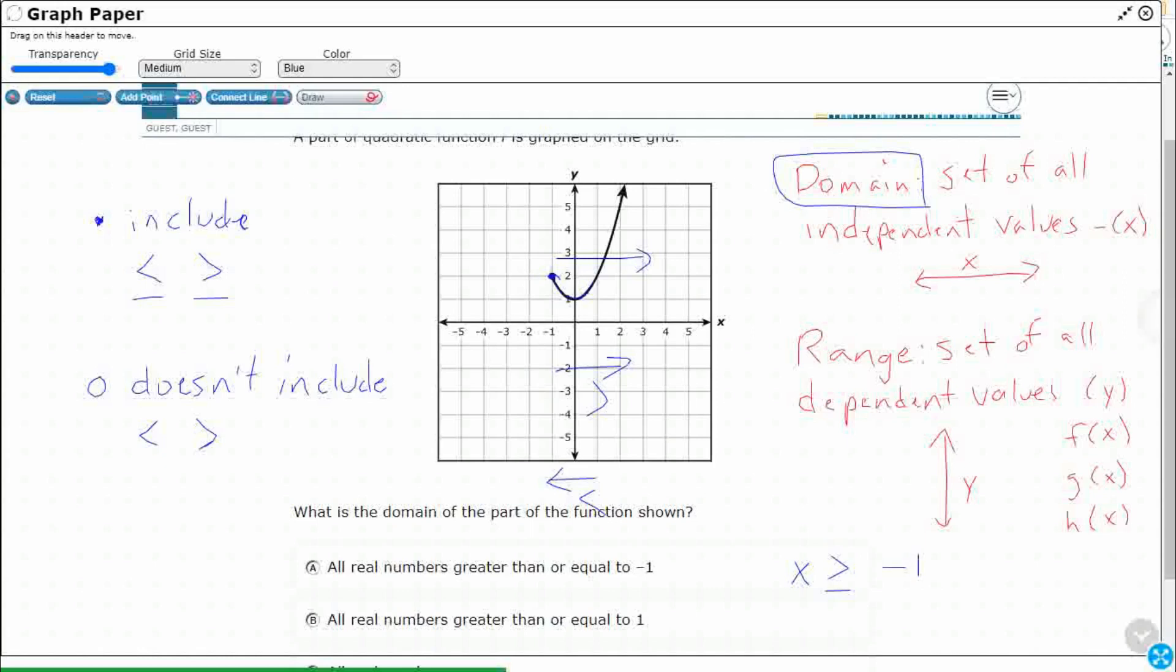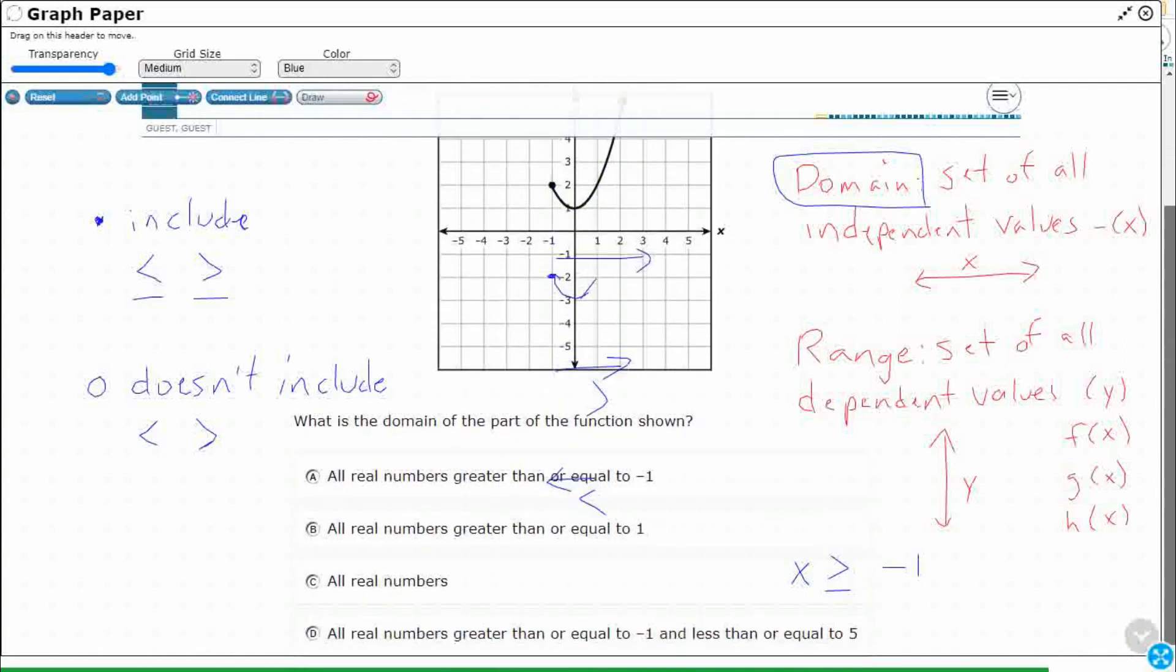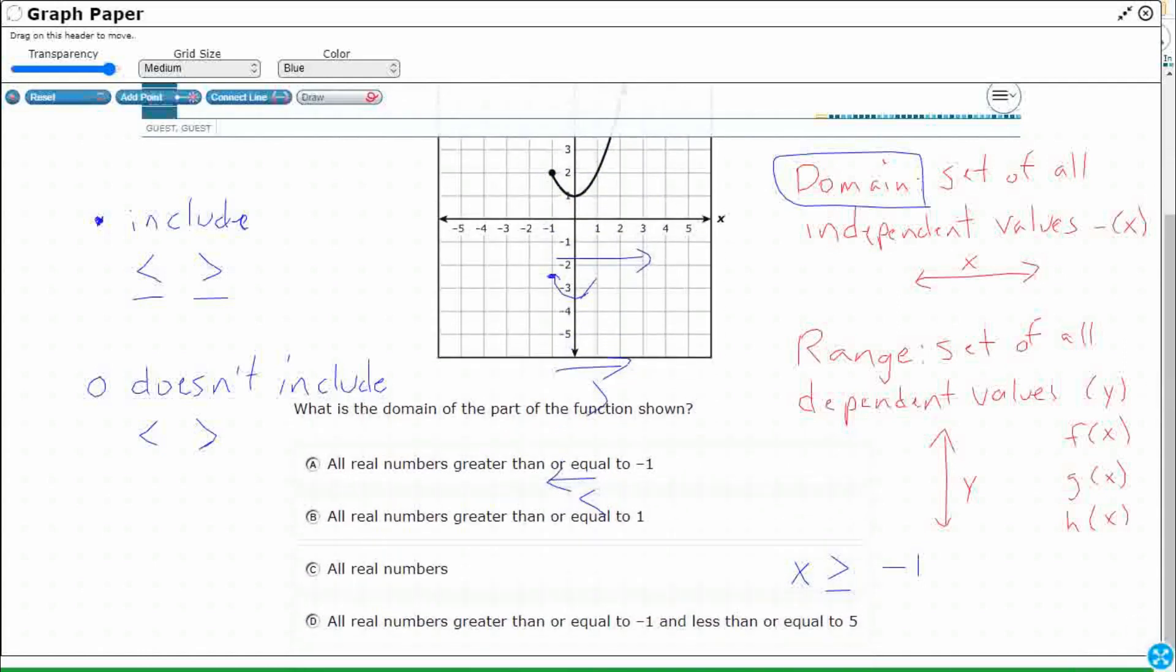Now we need to translate that. I'm going to move this and some of these lines. It's going to look a little bit strange. We need to translate all of these values into symbols here. So all real numbers, x is greater than or equal to negative one. All right. A definitely is what we're looking for.